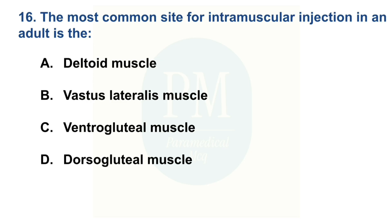The most common site for intramuscular injection in an adult is the. Option A: Deltoid muscle. Option B: Vastus lateralis muscle. Option C: Ventrogluteal muscle. Option D: Dorsogluteal muscle. The correct option is Option C — Ventrogluteal muscle.